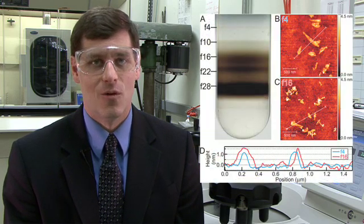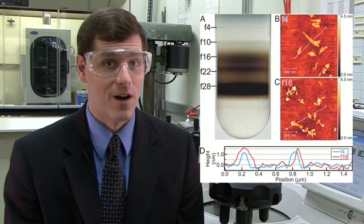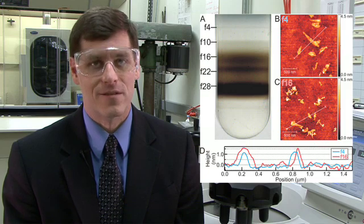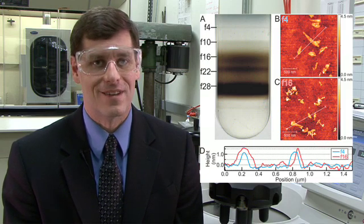DGU, or density gradient ultracentrifugation, is widely used in biochemistry for sorting biomolecules such as DNA, proteins, and carbohydrates. And what we have done in our research is adapted that technique to nanomaterials to sort them by their structure and therefore their properties.